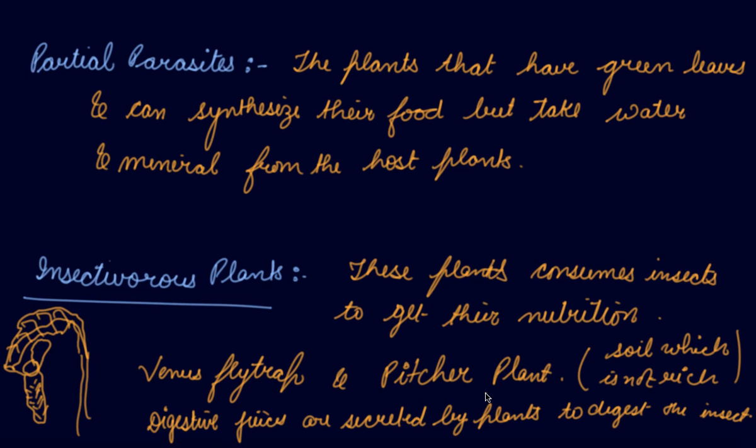These plants use the nutrition obtained from insects to supplement the food they prepare by photosynthesis. These are the types of heterotrophic nutrition modes in plants. Download the Scholars Learning app and enjoy the learning experience.